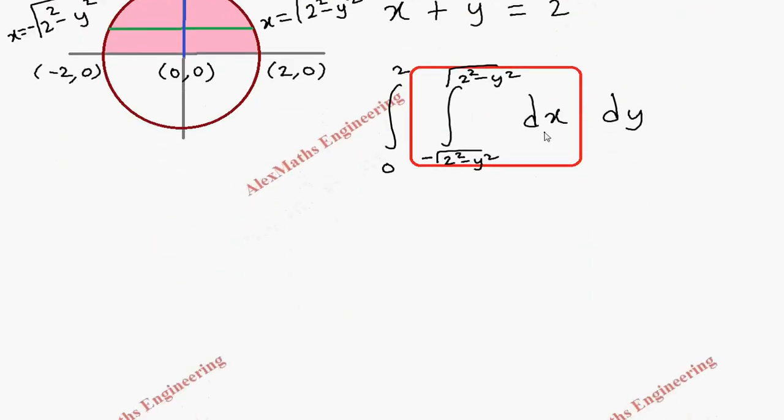Now integration of dx is x. We have to substitute the limit -√(4-y²) to √(4-y²).